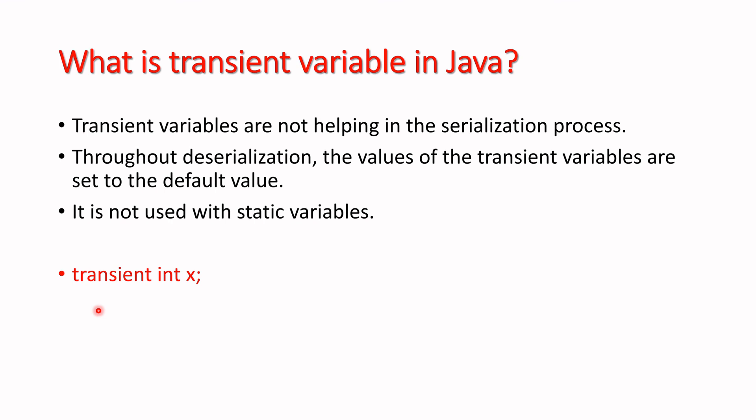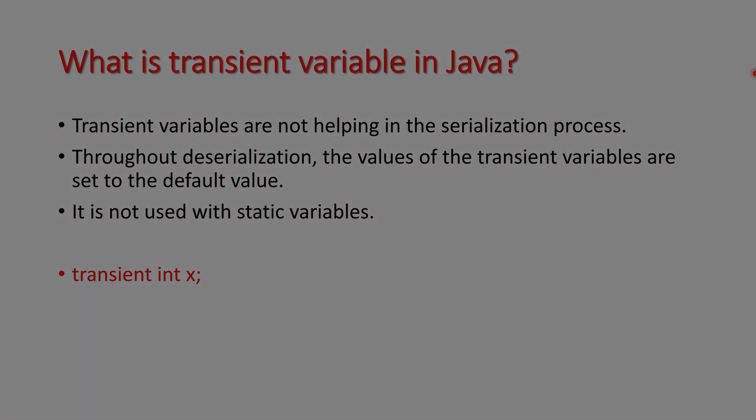In a class, generally the model classes contain the transient keyword for their respective attributes. So when a class is going to be serialized, those transient attributes will not be part of the serialization process — the rest of the code will still be serialized. Thanks, and if you have any doubt please ping me.